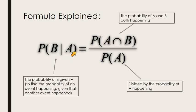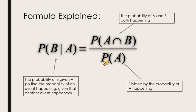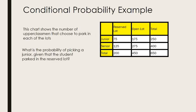Know these notations. The probability of B given A is equal to the probability of A and B happening divided by the probability of A. This formula might not seem super intuitive right now, but as we work through some examples I think it will start making sense.